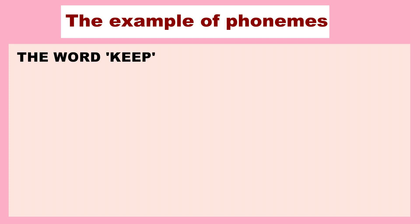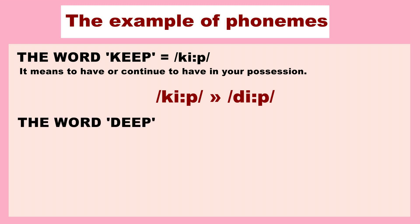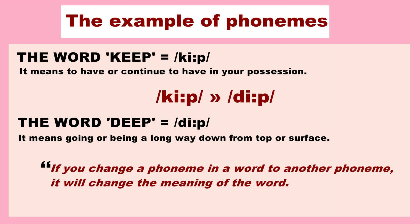The word 'keep' contains three phonemes: /k/, /i/, and /p/. The word 'keep' has the meaning of 'to have or continue to have in your possession.' When we change the /k/ phoneme to the /d/ phoneme, it changes the word from 'keep' into 'deep,' which carries a different meaning. 'Deep' means going or being a long way down from the top or surface. So if you change a phoneme to another phoneme, it will change the meaning of the word — that's why a single phoneme could convey a meaning.